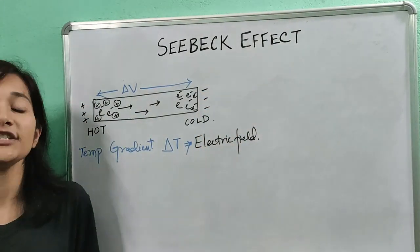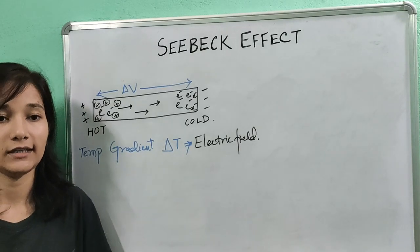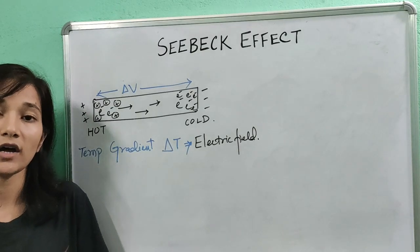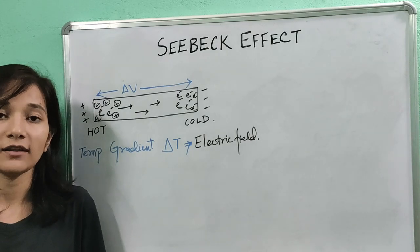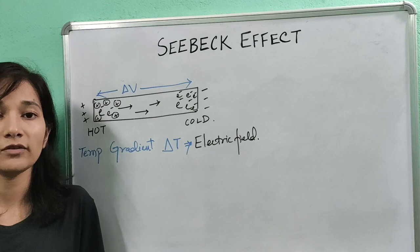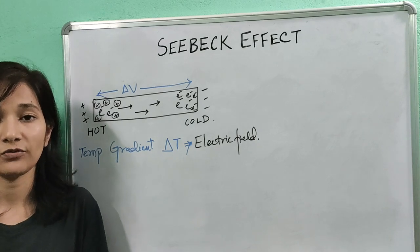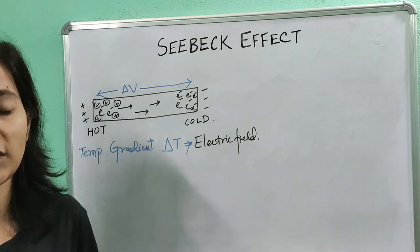This potential delta V which is generated across a piece of metal due to a temperature gradient delta T is called the Seebeck effect, and the factor which gives us the magnitude of this effect is called the Seebeck coefficient or the thermoelectric coefficient.